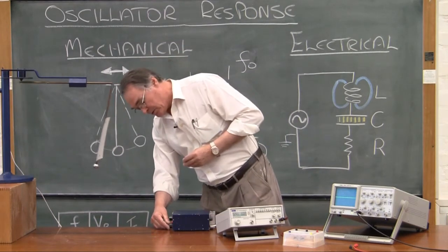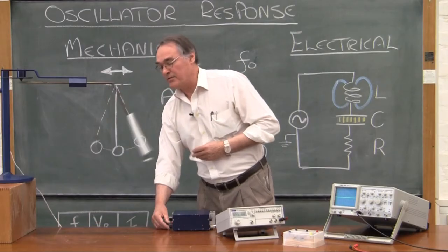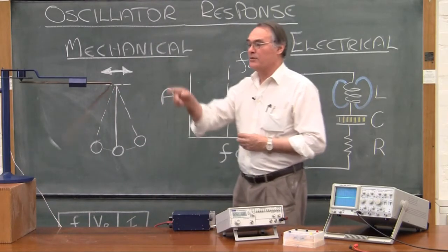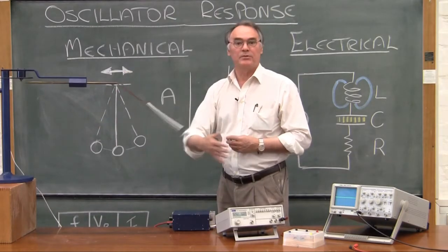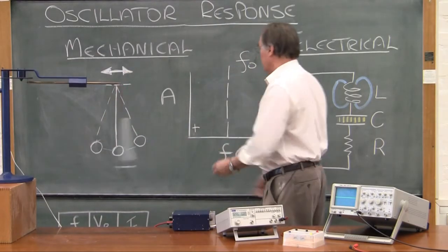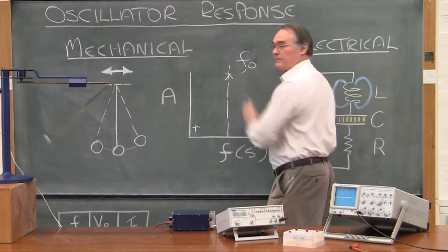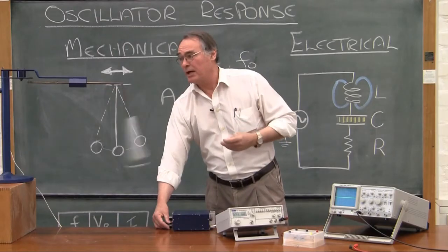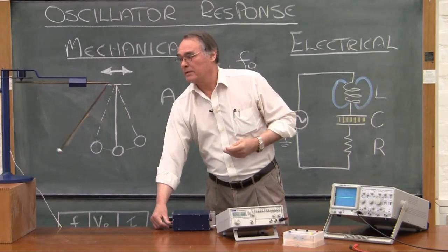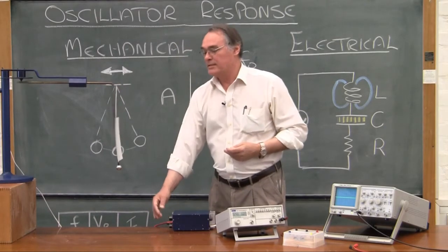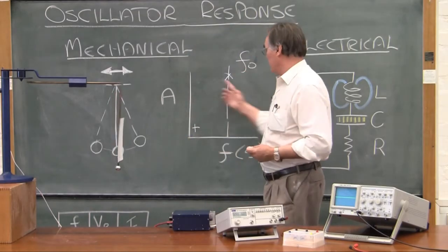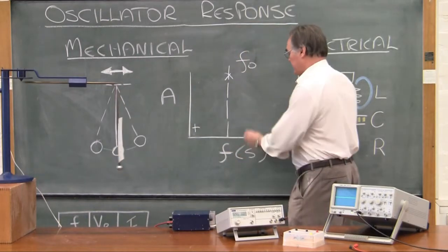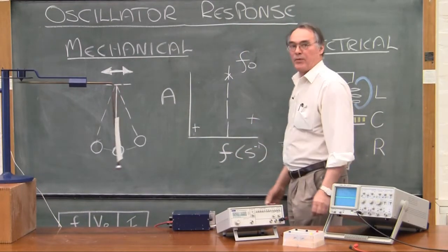Now I'm going to drive the thing faster and faster and go to the resonant frequency. You'll see that when I drive this thing at its resonant frequency, the amplitude — the response — is very big. And now when I go beyond that point to some frequency much higher, you'll see once again the amplitude, the response of the oscillator, is low again.